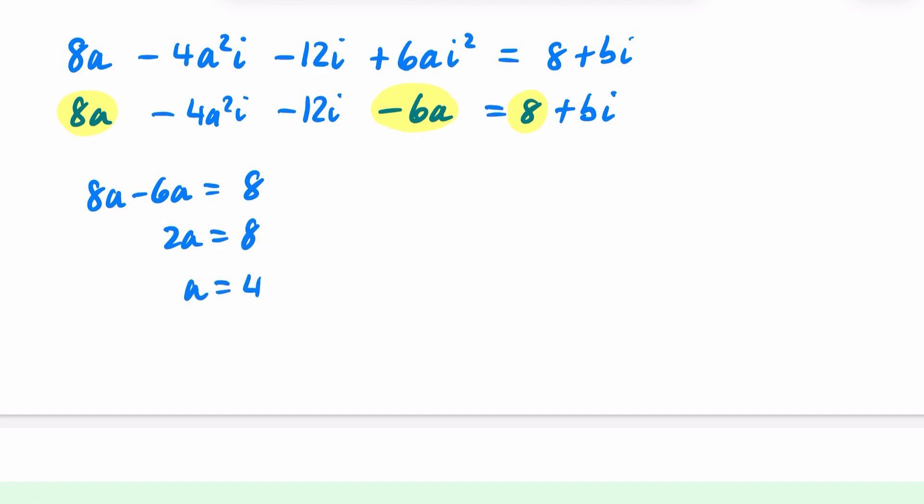Which then tells me for the imaginary parts, which are these parts, must be equal to b. So this means that the minus 4a squared and the minus 12 must just be equal to b. Now, I know that a is equal to 4, so I can do minus 4 multiplied by 4 squared minus 12, which is equal to b. So it's minus 4 times by 64 minus 12. That's minus 76. So b is equal to minus 76, and a was equal to 4.